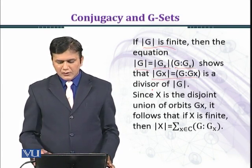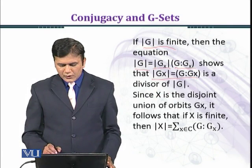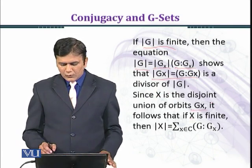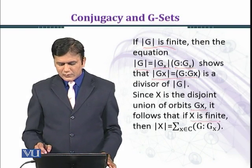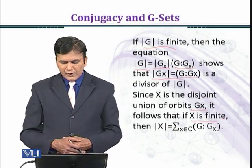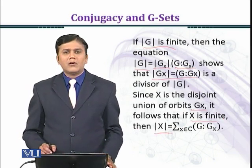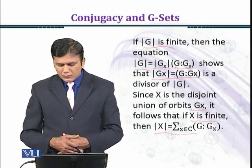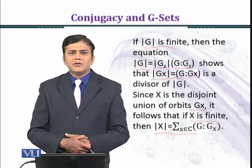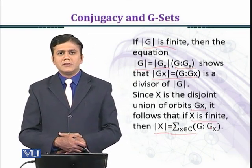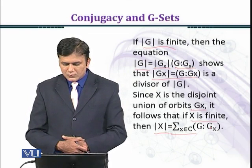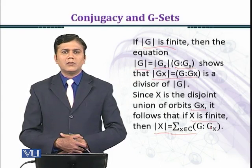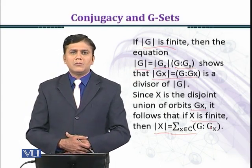Since X is the disjoint union of orbits G_x, it follows that X is finite if X is finite. Then the order of X equals sigma over x belonging to C of the index of G_x in G. Every element x belongs to exactly one class, and each orbit represents a class.